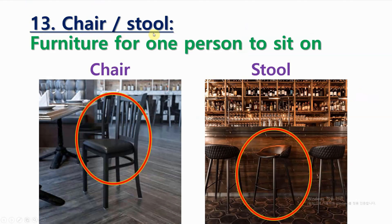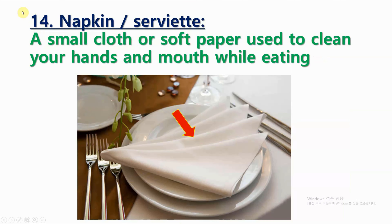Number 13: Chair, or stool. Furniture for one person to sit on. Number 14: Napkin, or serviette. A small cloth or soft paper used to clean your hands and mouth while eating.